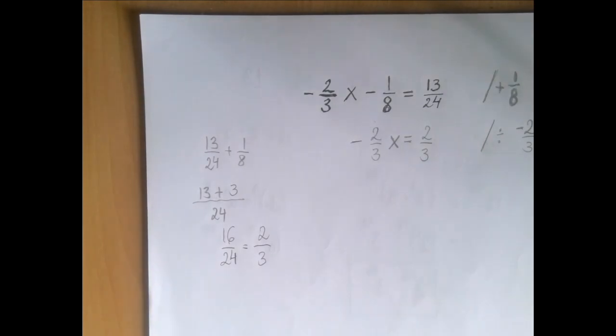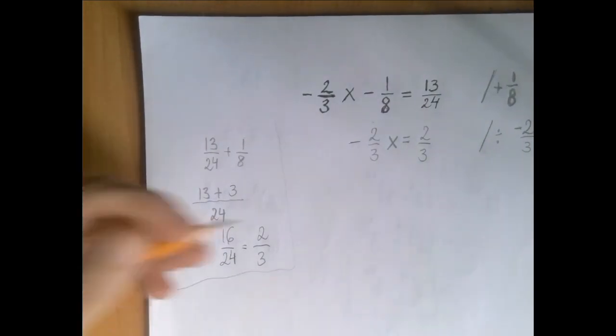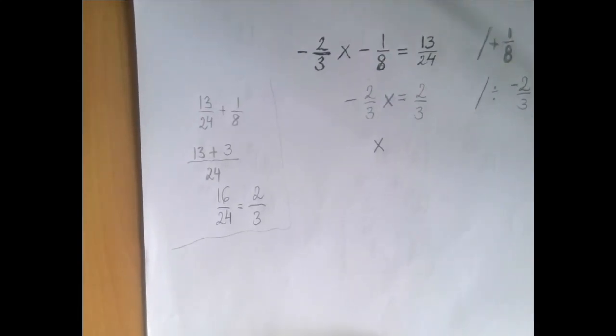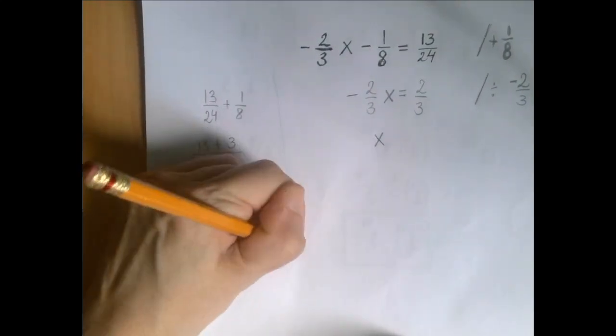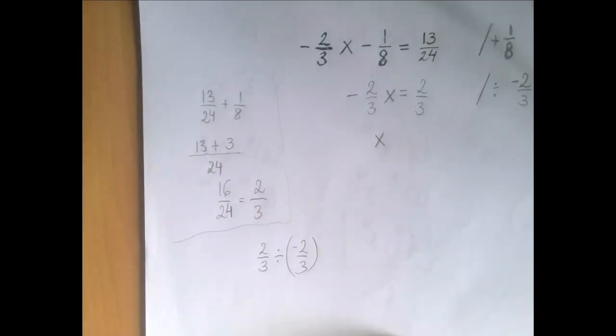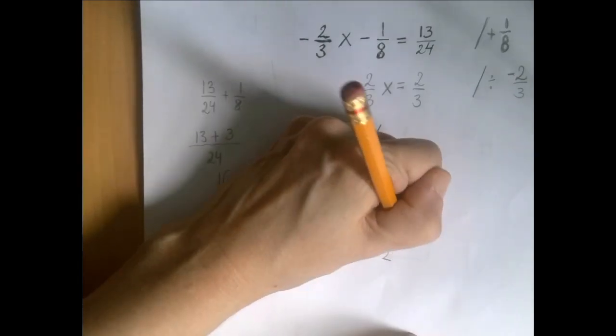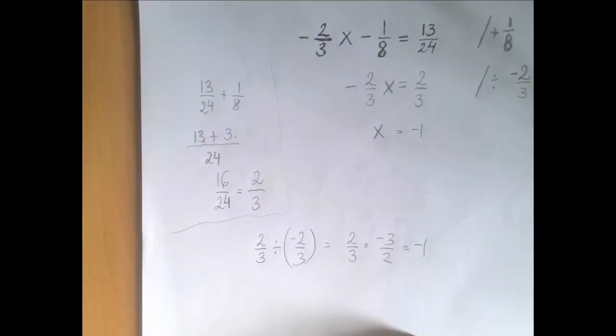So now we're going to divide both sides by negative 2 over 3. So you can see the answer but let's pretend we haven't. We have x alone here on the left hand side. For the right hand side we have 2 over 3 divided by negative 2 over 3. To divide is to multiply by the reciprocal and now we get negative 6 over 6 which is negative 1. So x is negative 1. So we think.